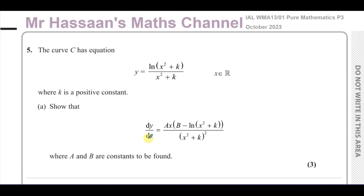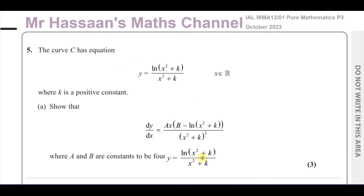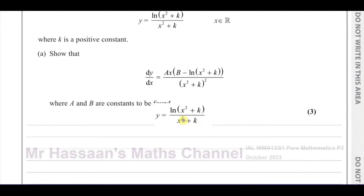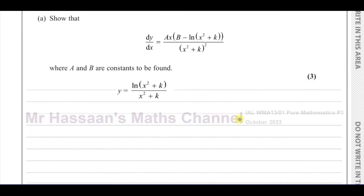Show that dy/dx is equal to ax(b − ln(x² + k)) over (x² + k) all squared, where a and b are constants to be found. So we need to differentiate this expression and show that we end up with that.